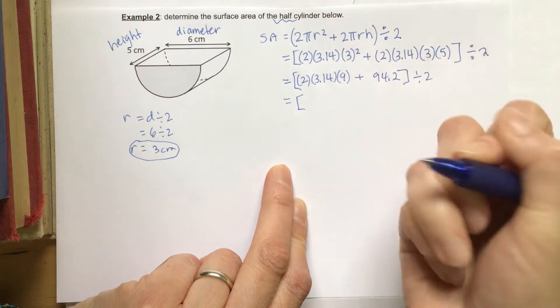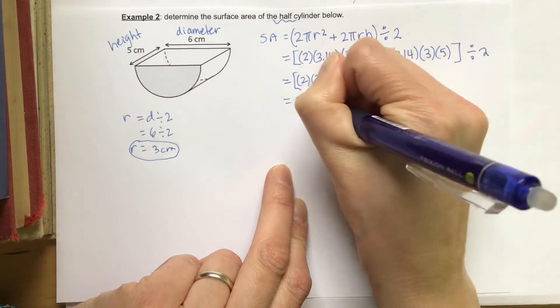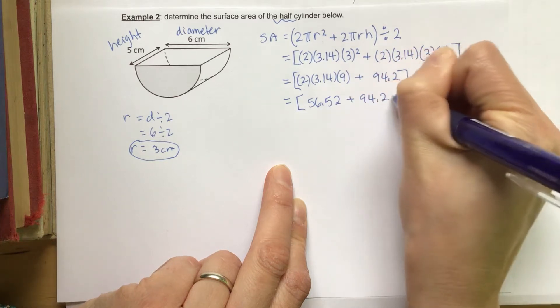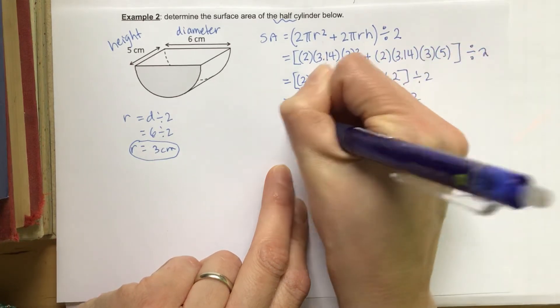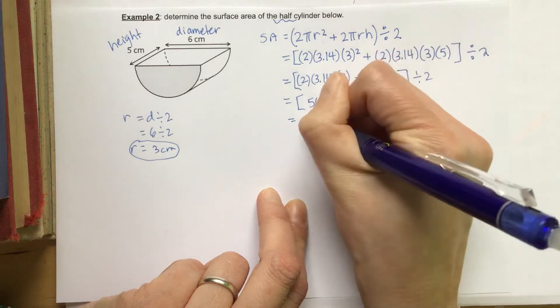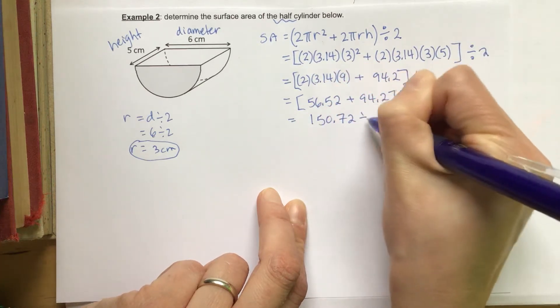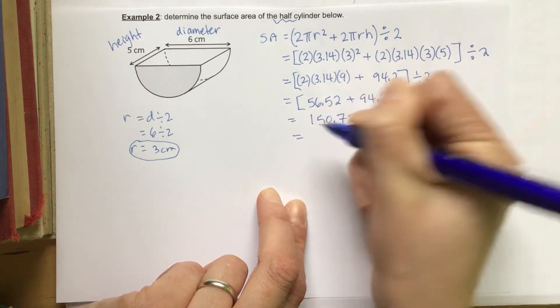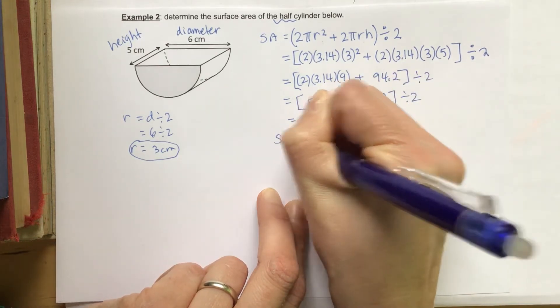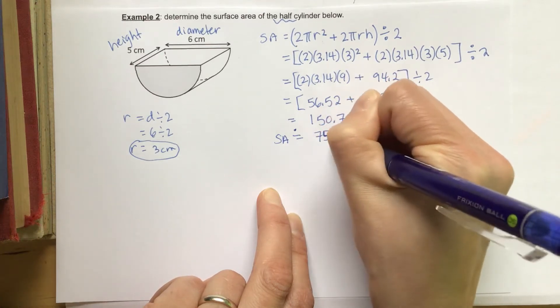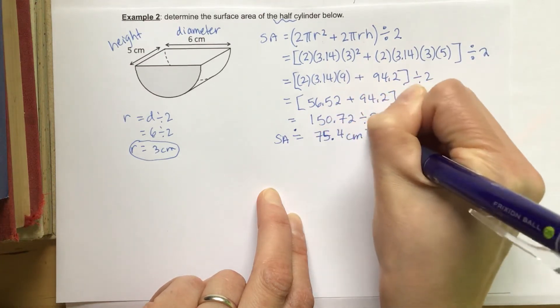So 2 times 3.14 times 9 gives us 56.52, and then we add that to 94.2, and divide it by 2. Here we get 150.72, divided by 2, and we're going to round to 1 decimal place. So this is going to give us approximately 75.4 centimeters squared.